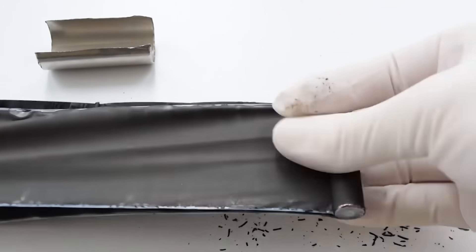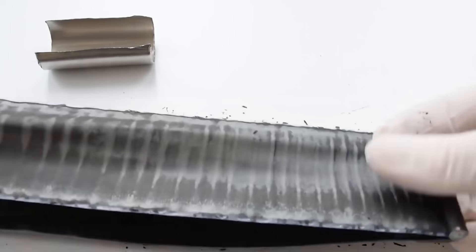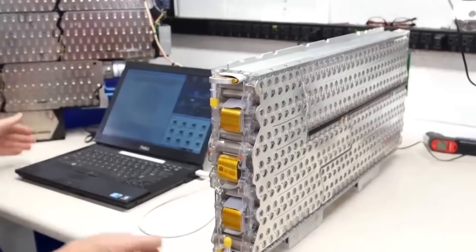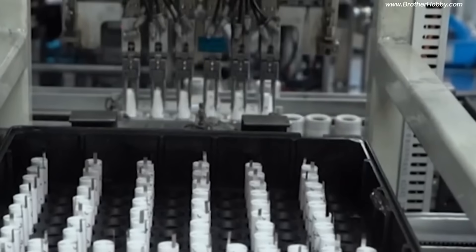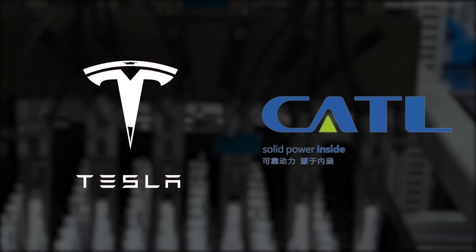Thanks to the boom in EV sales, auto companies are scrambling to secure a supply of cathode materials, and this is driving up prices. However, when it comes to EV lithium-ion batteries, there is an important question that is moving researchers and battery makers like Tesla and CATL to act with speed.